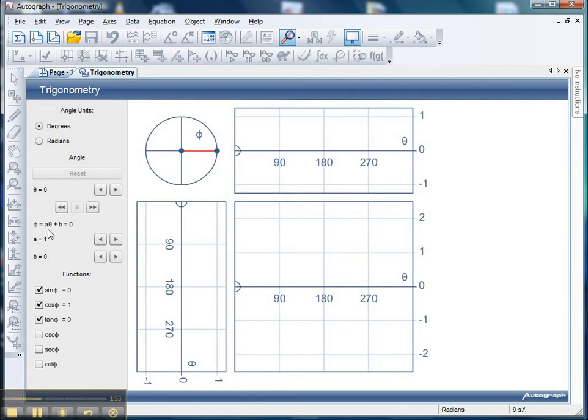I can start changing some of these constants. This is where it's good for GCSE and A-level. If I increase the value of A to 2, let's have a look what that does to the graph.